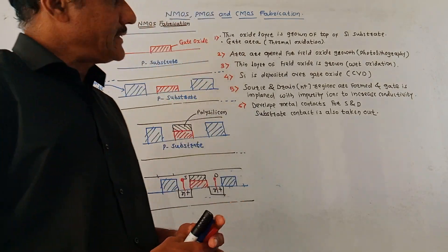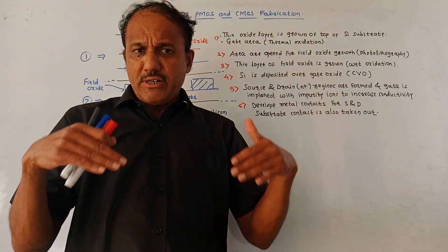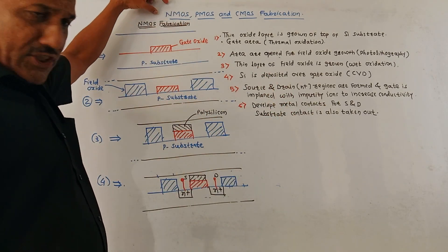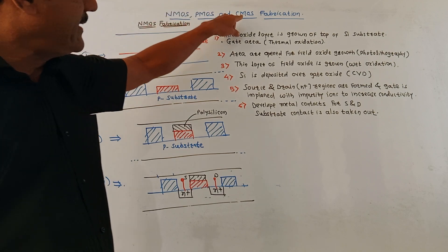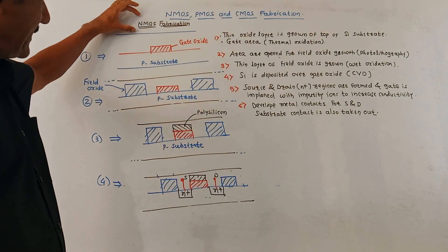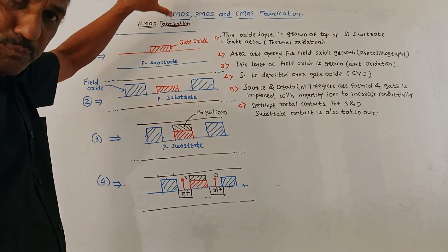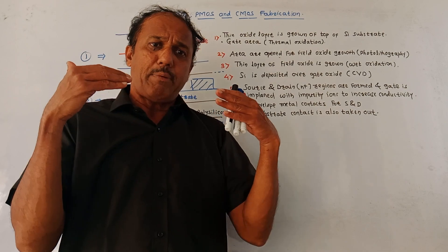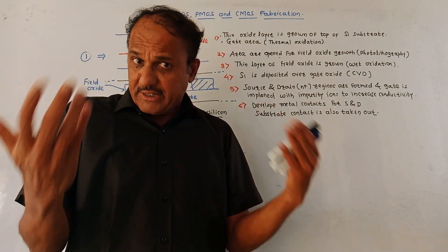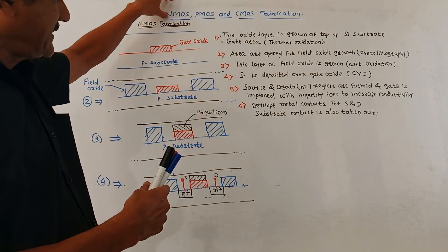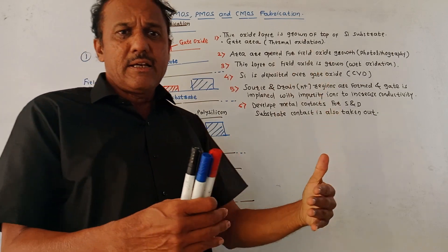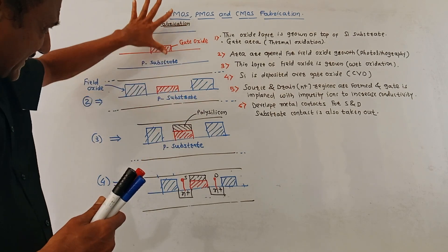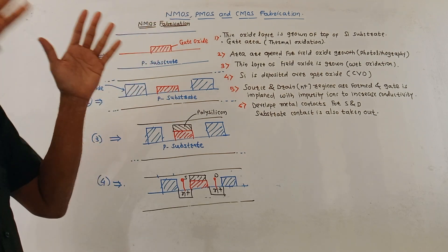Hello and welcome back to this channel. This topic is fabrication methods for different elements. In this session we will discuss the fabrication methods for N-type MOSFET, P-MOSFET, and complementary MOSFET. First part is N-MOS fabrication. From an exam perspective, you may expect detailed questions related to the fabrication techniques used for MOSFET fabrications, covering all three types: N-MOS, P-MOS, and C-MOS.